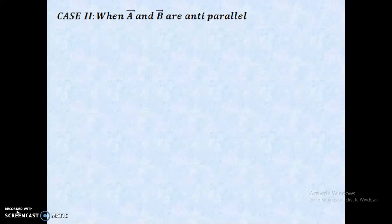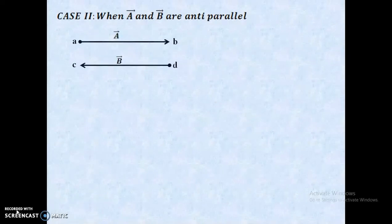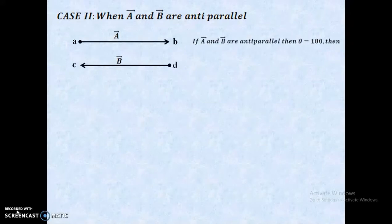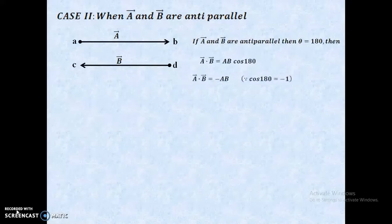Case 2: when A-vector and B-vector are anti-parallel, the angle between these two vectors is 180 degrees. That is, theta equals 180. Therefore, A-vector dot B-vector equals A·B·cos(180). Cos(180) equals minus 1. Therefore, A-vector dot B-vector equals minus A·B.